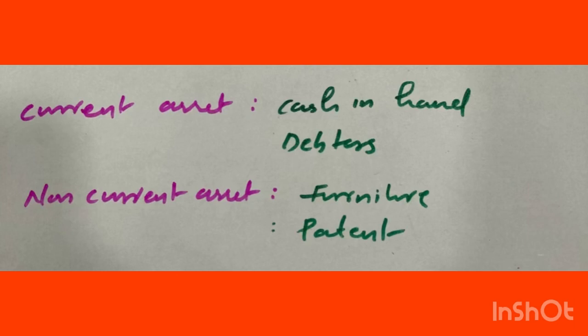The non-current asset is a fixed asset. Examples of fixed assets include furniture and patent.